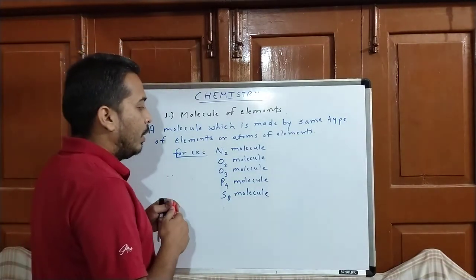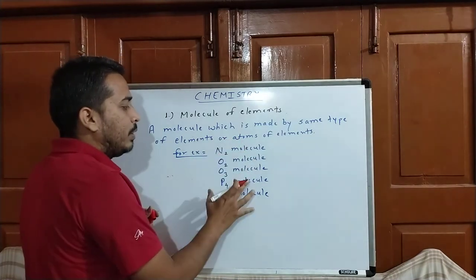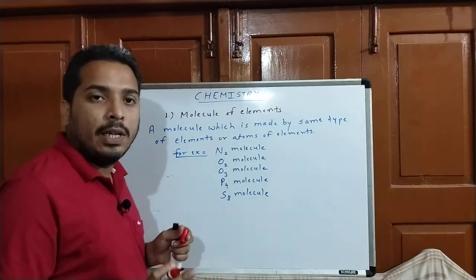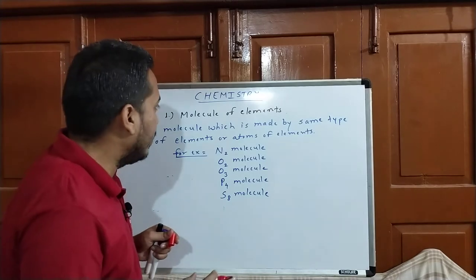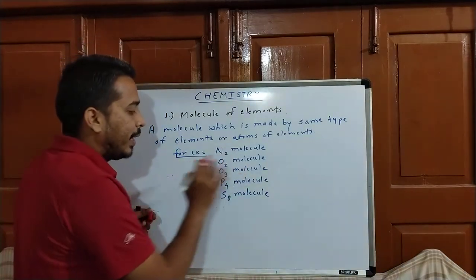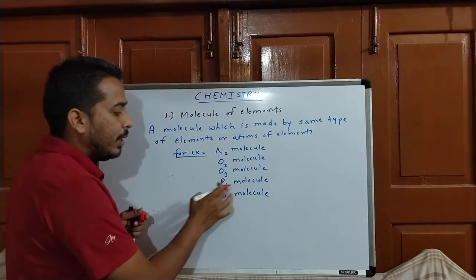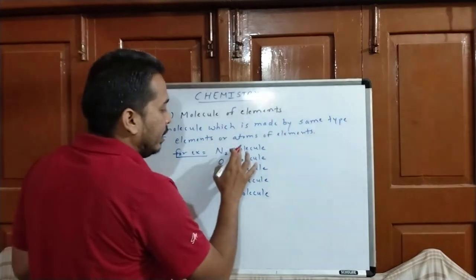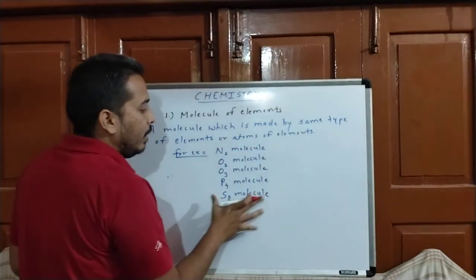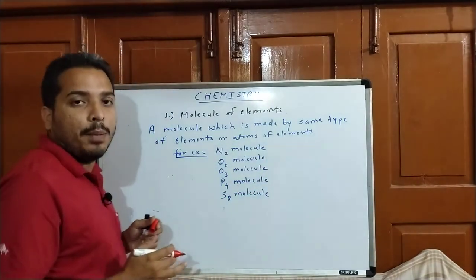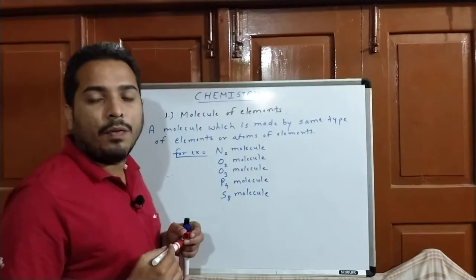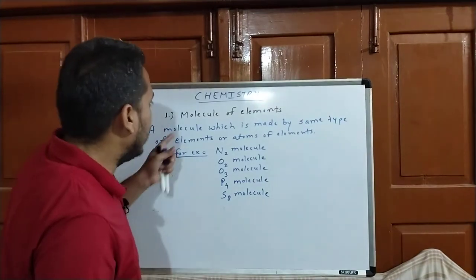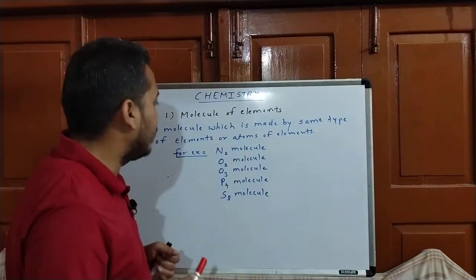Molecules are generally what we can say: they are diatomic, triatomic, or tetraatomic. These molecules have different numbers of atoms. These are all molecule of elements.